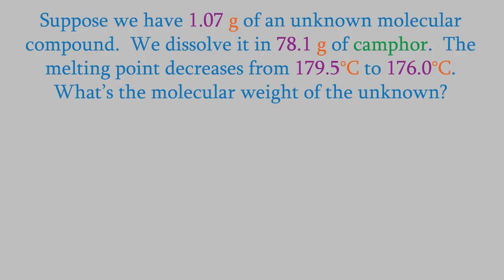Suppose we have 1.07 grams of an unknown molecular compound, and we dissolve it in 78.1 grams of camphor. When we do that, it makes the melting point of the camphor decrease from 179.5 degrees C to 176.0 degrees. Based on that, what's the molecular weight of our unknown? The first thing we need to do is decide which colligative property is being used here. The solvent is camphor, and the solute is the unknown. When we added the unknown, the melting point of the camphor went down. If you think about it, you'll probably realize that the melting point is the same thing as the freezing point. So the freezing point is what went down. That means the colligative property we're using is freezing point depression.